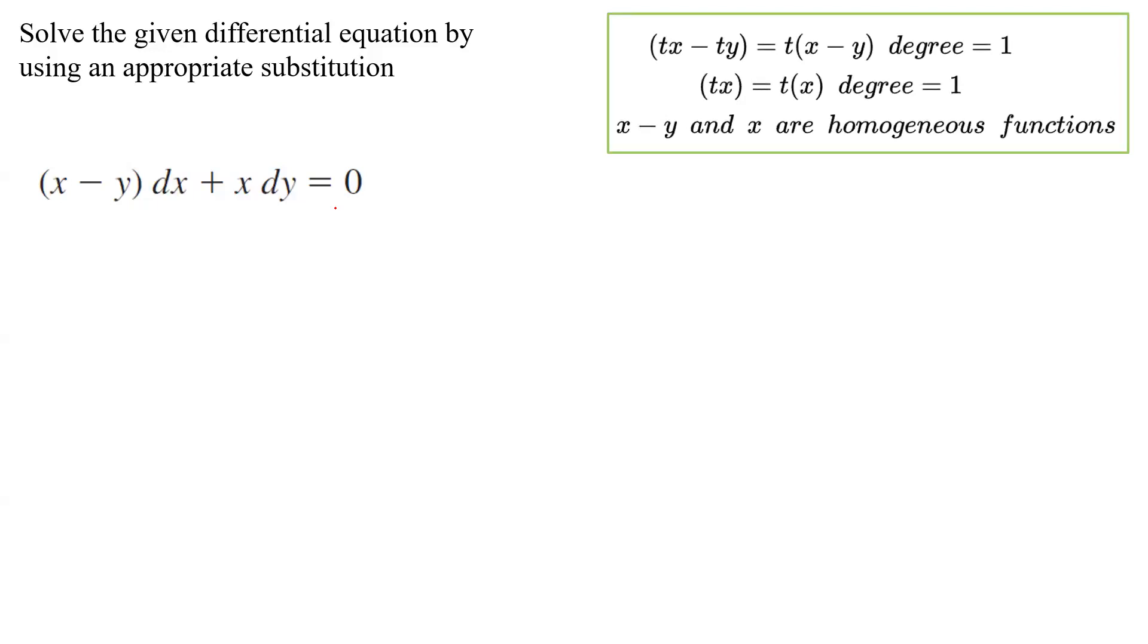In this example, we want to solve the differential equation using substitution. Take a look: (x - y)dx + x dy = 0. Both of these functions, x - y and x, are homogeneous. Why is that?